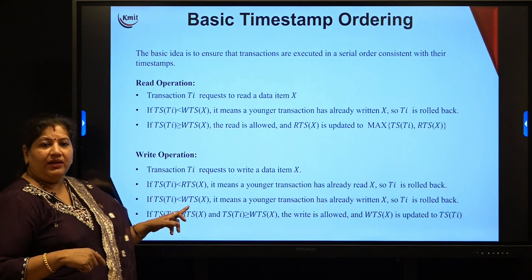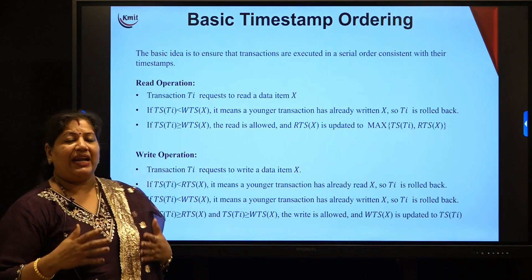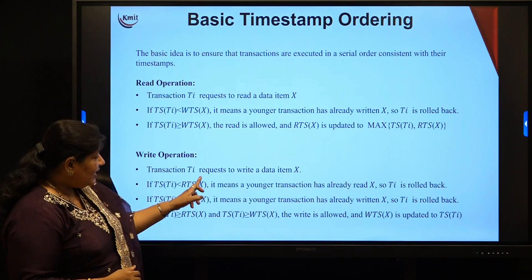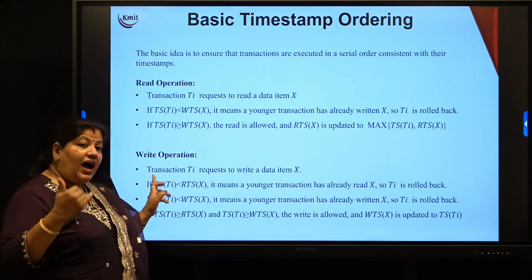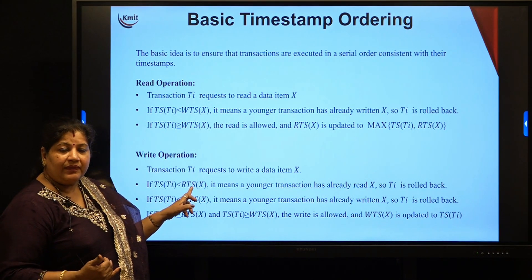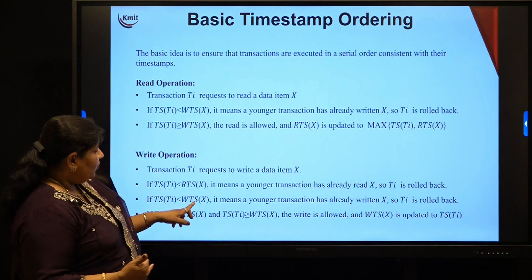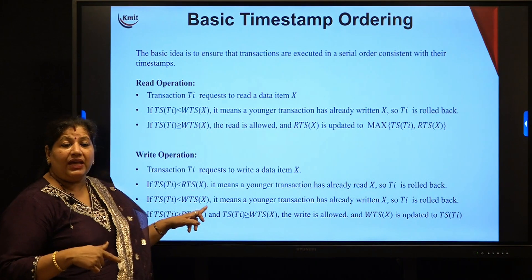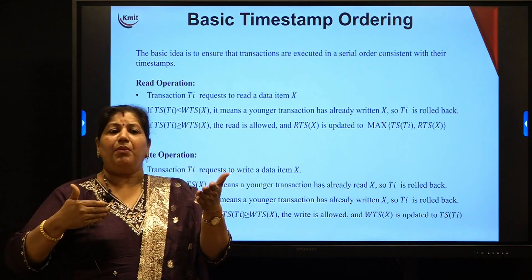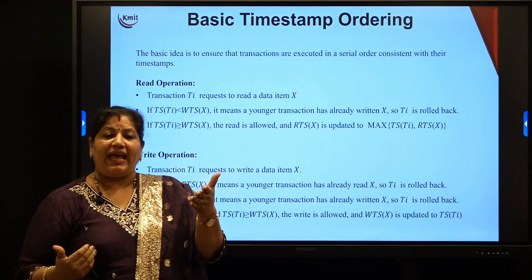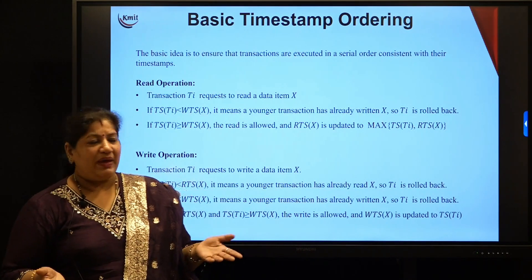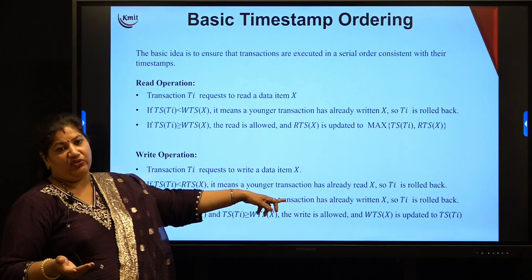Coming to the write operation — a transaction Ti asks to write on data item x. You check: is there any younger transaction that has already read or written the data? In both cases, Ti is going out of order. The transaction which came after this has already performed operations on x. If Ti is allowed to write, the schedule would not be serial or sequential. So Ti cannot be allowed and must roll back in both those cases.